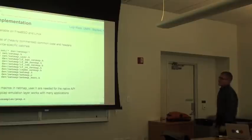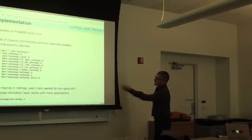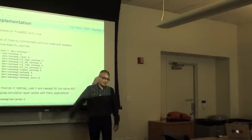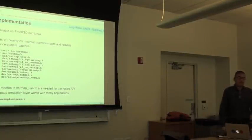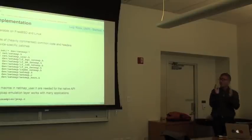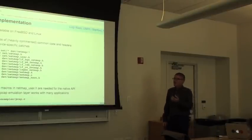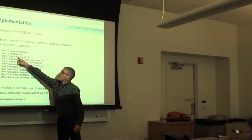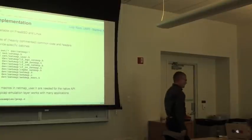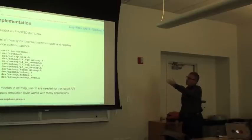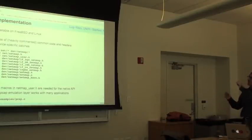In terms of code size: the core NetMap code is less than 2,000 lines. Device driver modifications, heavily commented, are in the range of a few hundred lines. Consider that a typical device driver is between 4,000 and 10,000 lines of code, so the modifications are really small. There is no large user library because the API is very simple — just a tiny NetMap user header, a few hundred lines, about half of them probably copyright headers.